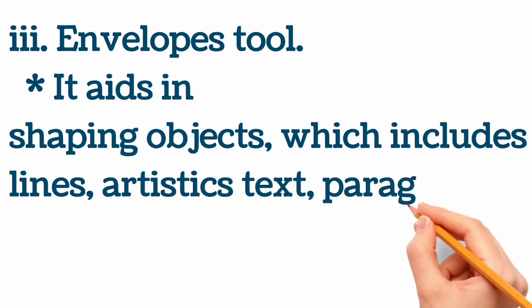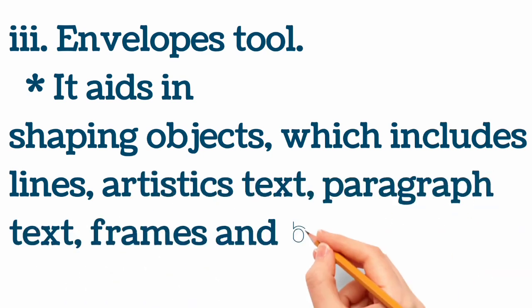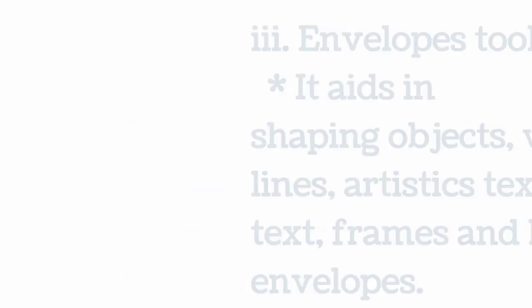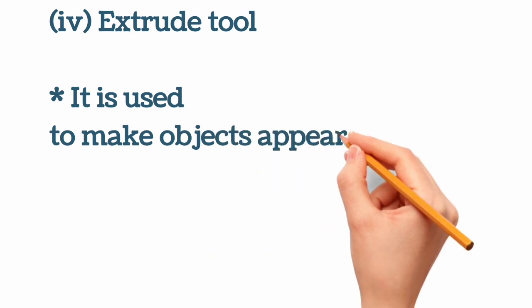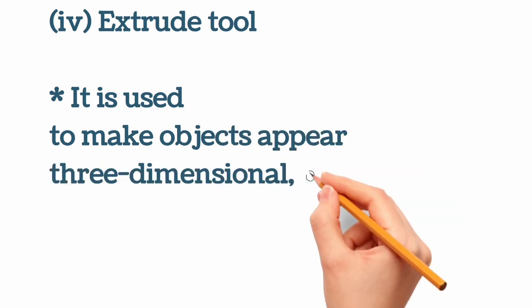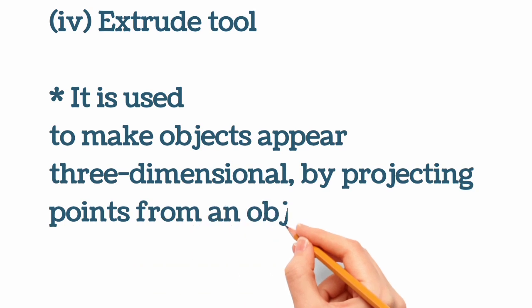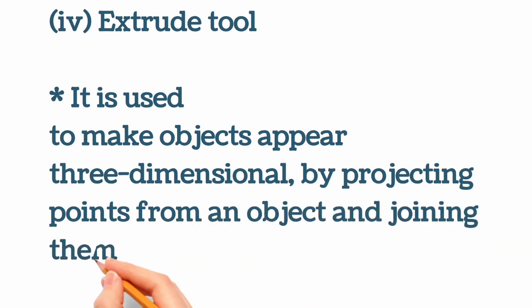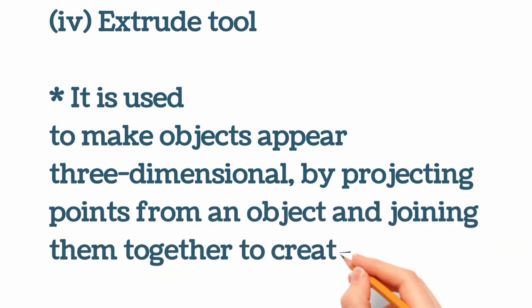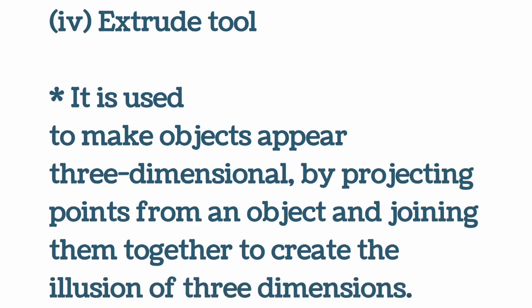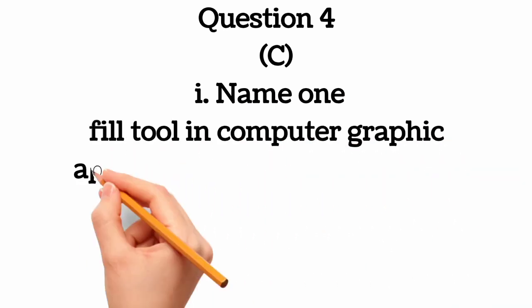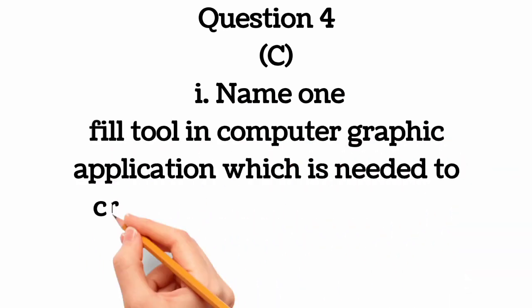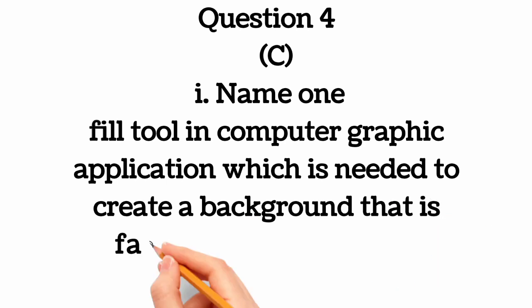The texture fill tool can be applied to lines, artistic text, paragraph text frames, and bitmaps with envelopes. Part iv: the extrude tool (SD2) is used to make objects appear three-dimensional by projecting points from an object and joining them together to create the illusion of three dimensions. The texture fill tool is also used to create a background faded from light blue to white.